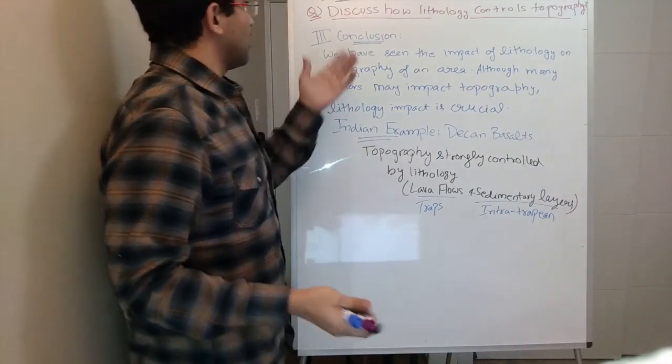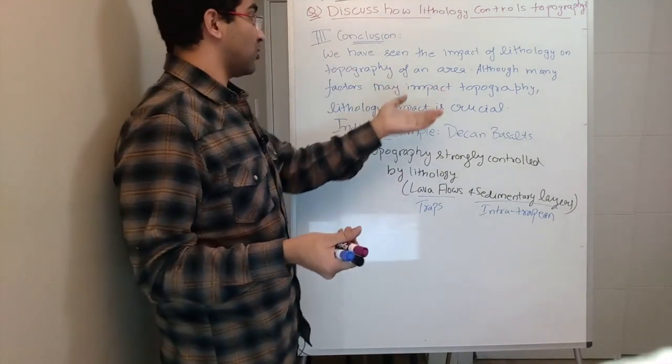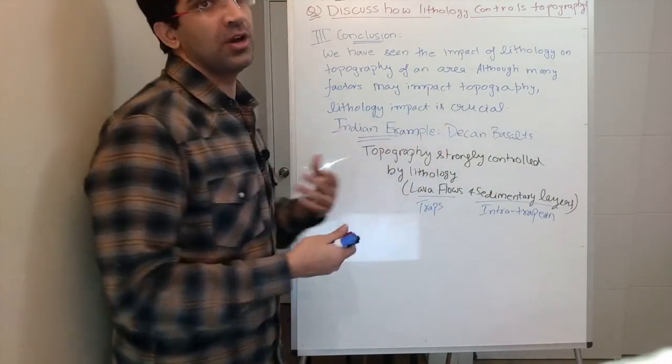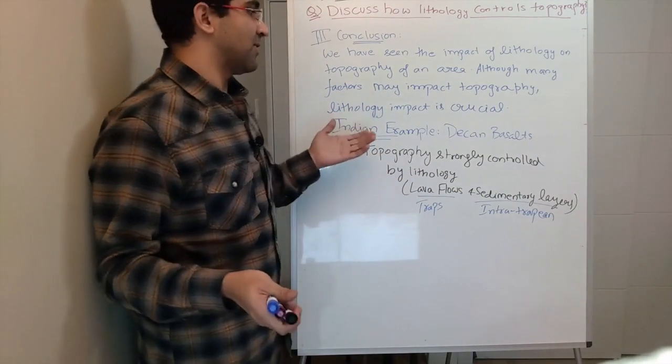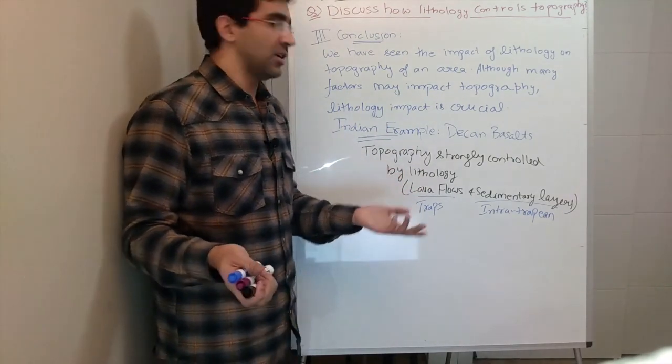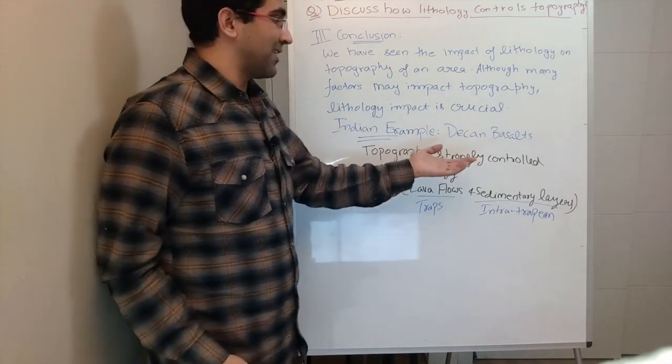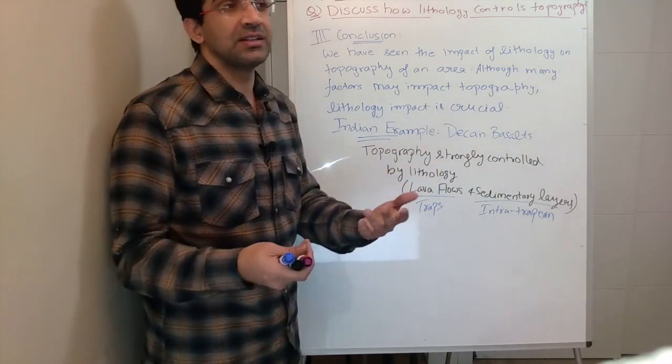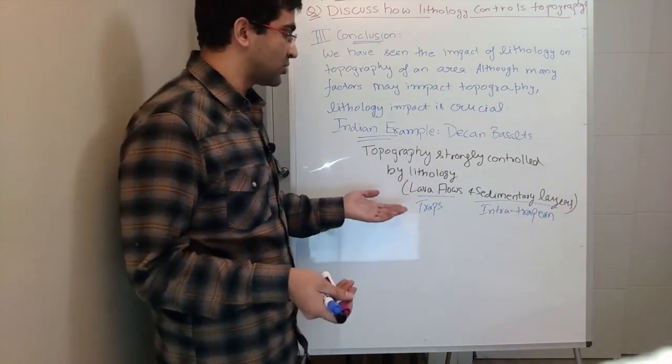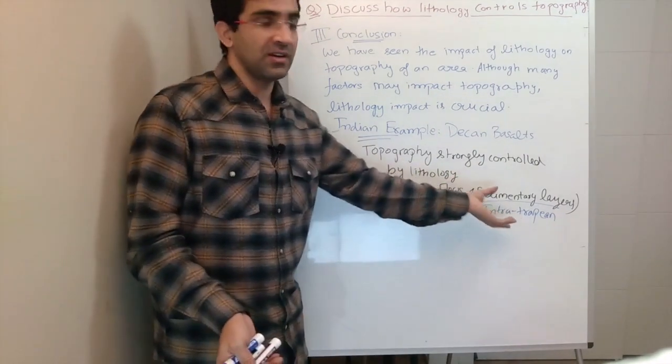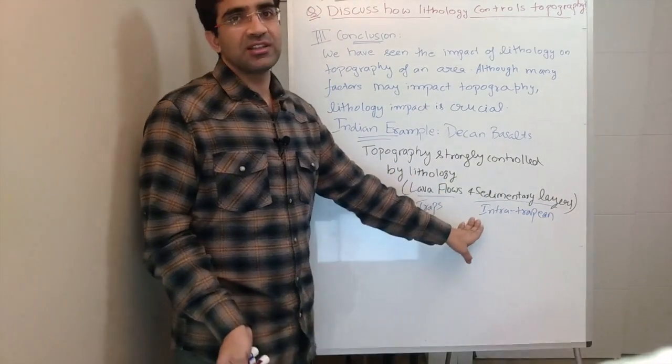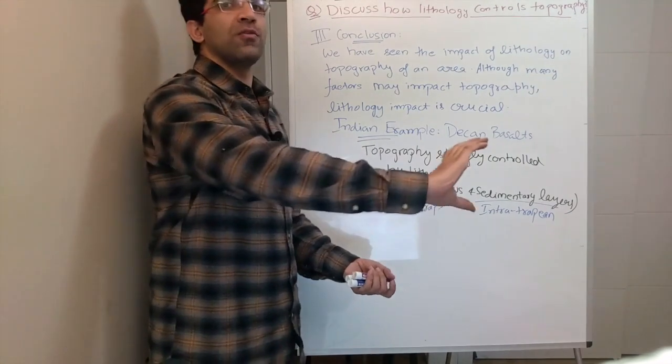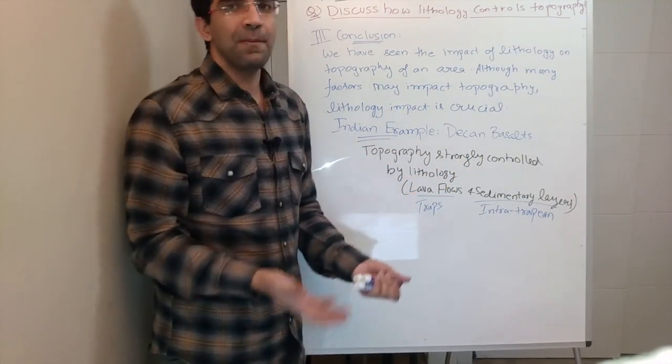Now we have to end our answer with the conclusion and in the conclusion we will just write that we have seen the impact of lithology on topography of an area and although many factors may influence topography, lithology is one of the most crucial ones. If you want in your answer you can actually give an Indian example for example if you look at the topography in the Deccan region of India. It is strongly affected by presence of volcanic rocks basalts which we call Deccan basalts. And for example there you see geomorphic features such as table-top mountains which are controlled by those interlayering of lava flows with the sedimentary layers. These lava flows they are known as the traps and the sedimentary layers are known as intra-trappean beds. Mostly it's not just dependent on lithology it depends on the geometry of those traps and intra-trappean beds. But again lithology also plays a role in that.